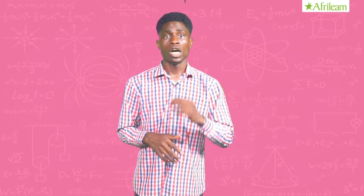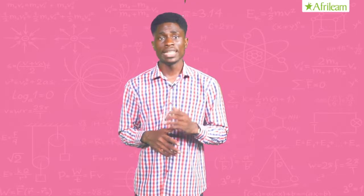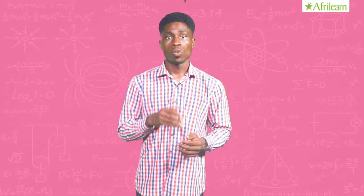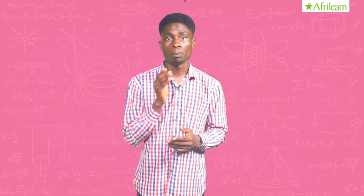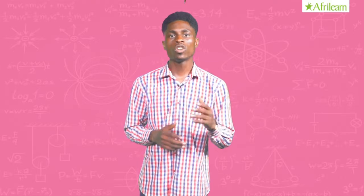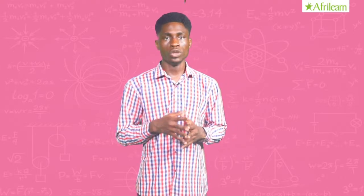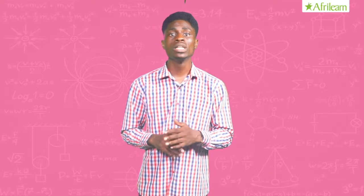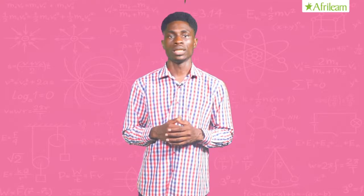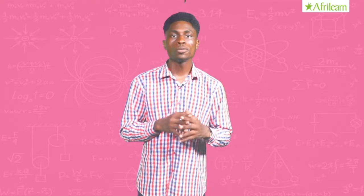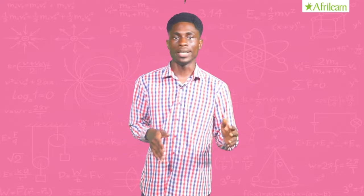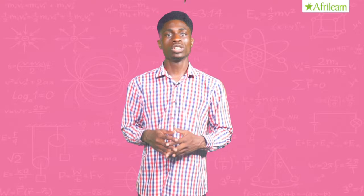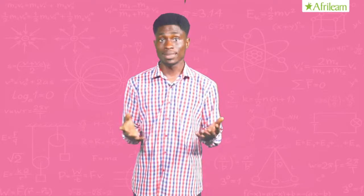A body weighs 5.5 Newton when measured in air and 3 Newton when completely immersed in kerosene. What is the upthrust experienced by the body? Solution: weight of body in air, real weight equals 5.5 Newton, and the apparent weight when immersed in kerosene equals 3 Newton. Upthrust equals real weight minus apparent weight, so upthrust equals 5.5 Newton minus 3 Newton, which equals 2.5 Newton. That's simple, right?